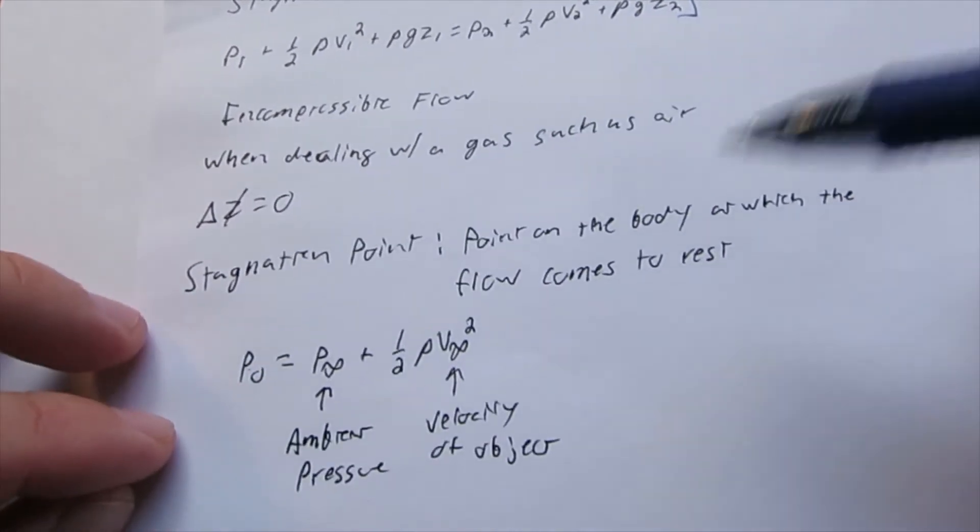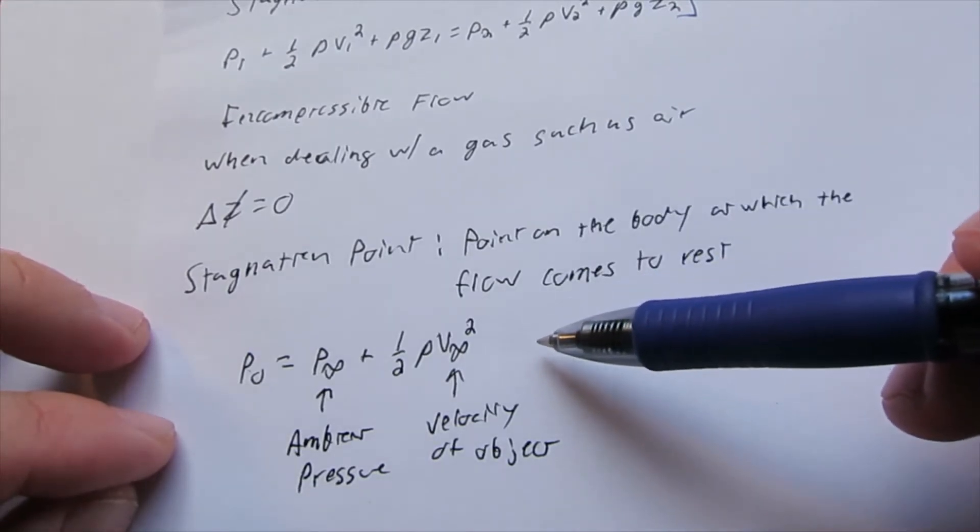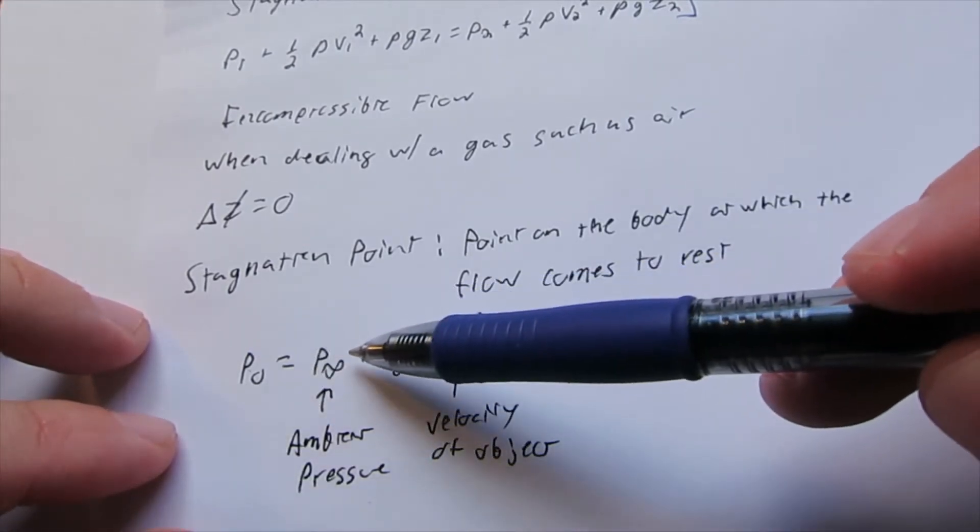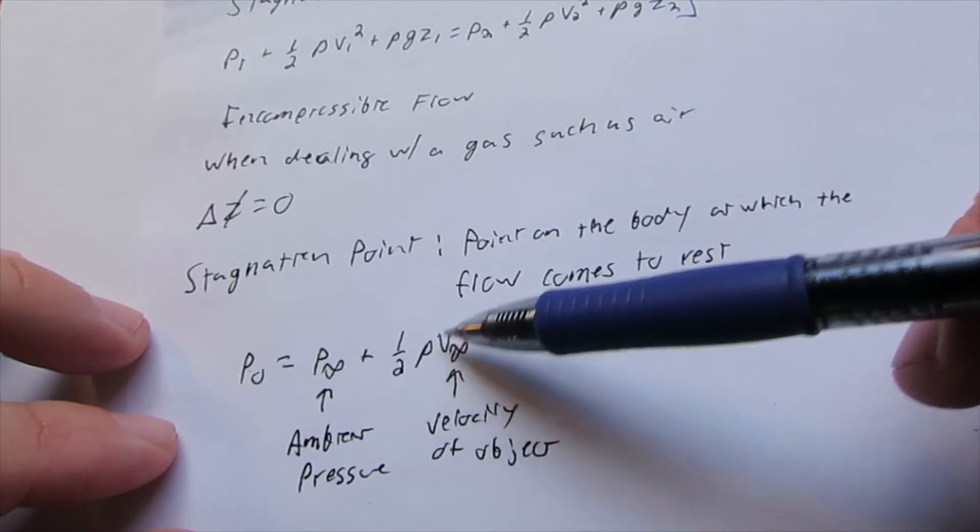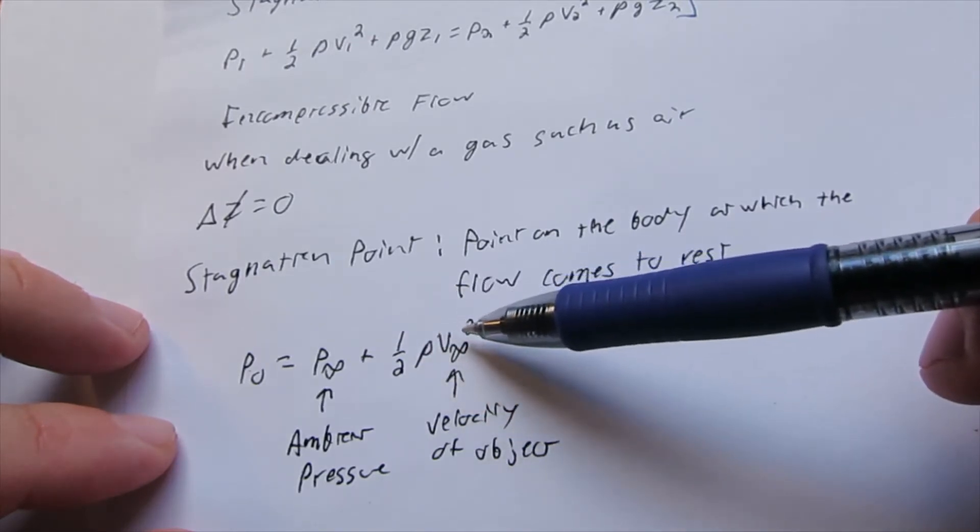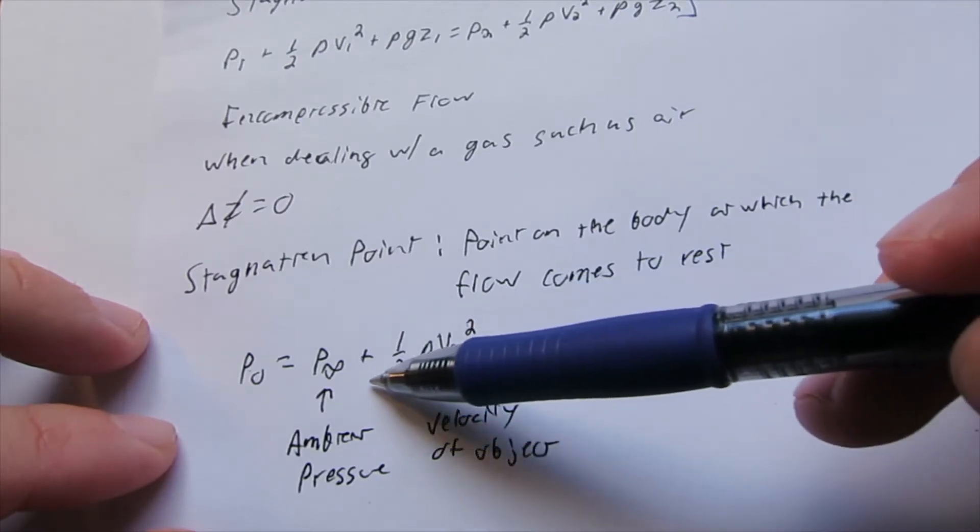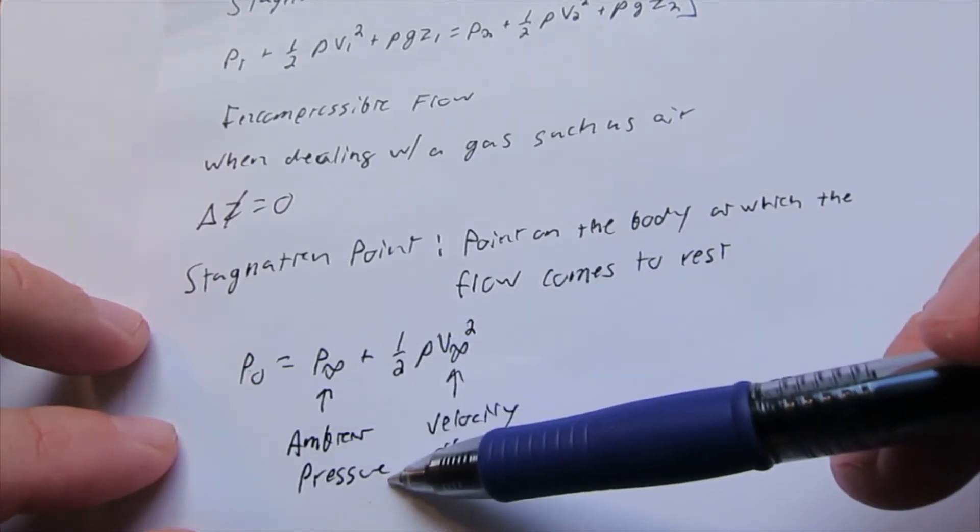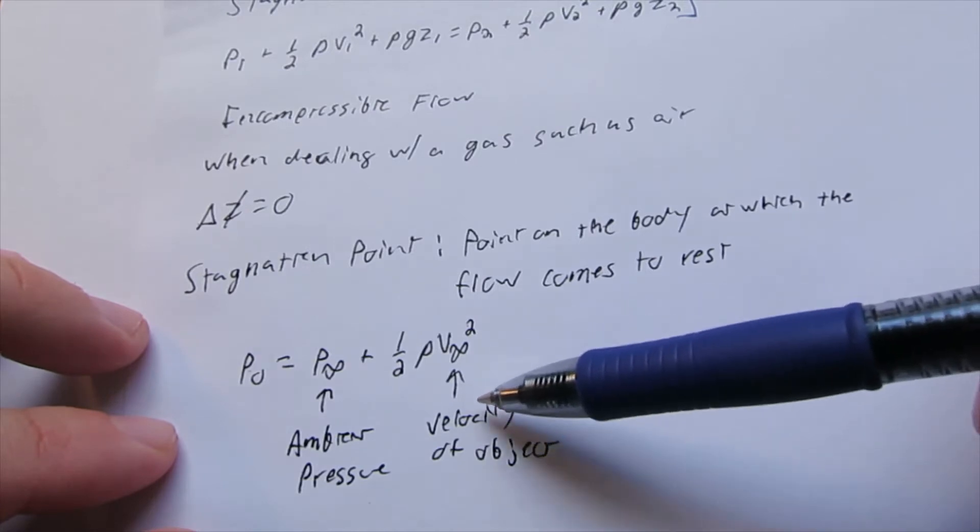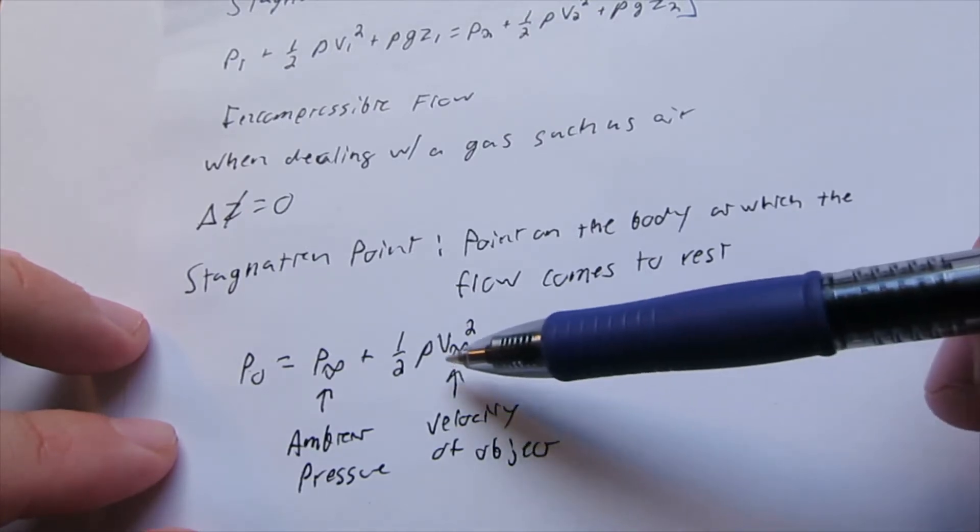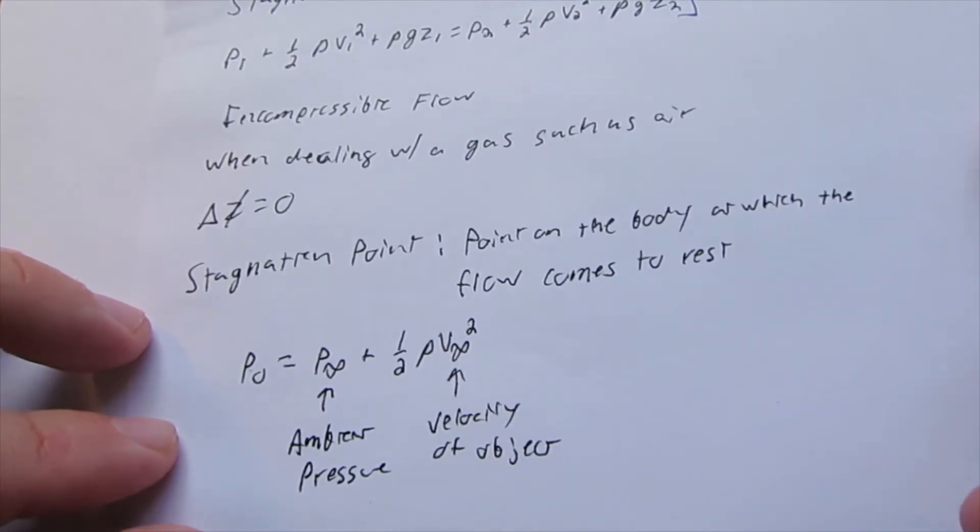This is our equation for stagnation pressure: P₀ = P∞ + ½ρV∞². P∞ is our ambient air pressure, V∞ is the velocity of the object, and ρ is the density.